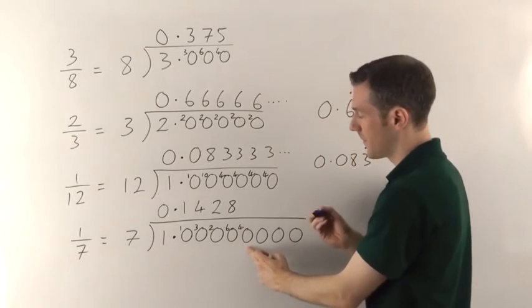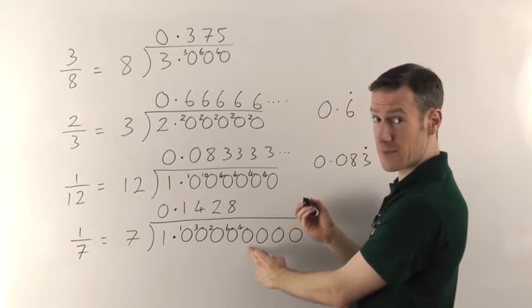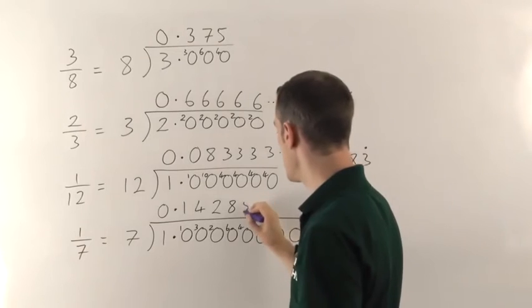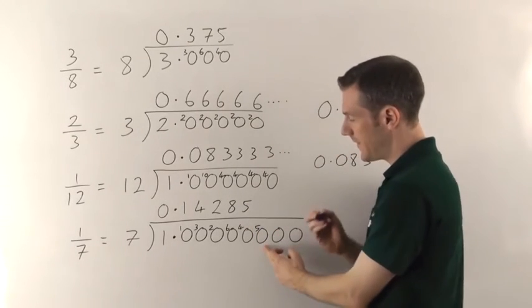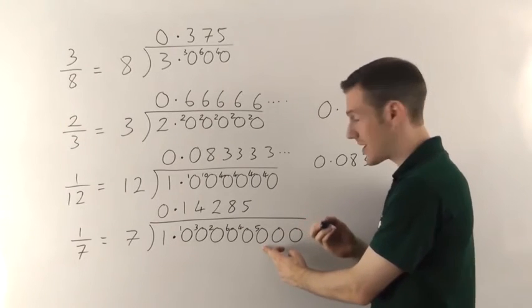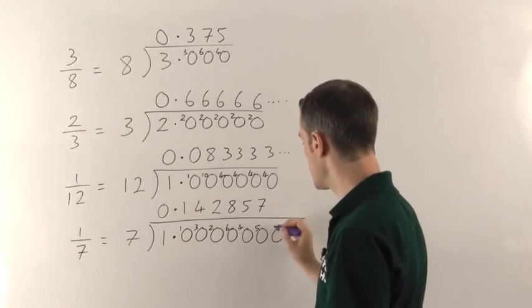Remainder 4. 7s into 40 will go 5 times. 5 7s are 35. So that's remainder 5. 7s into 50 will go 7 times because 7 7s are 49. So that's remainder 1.